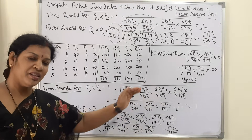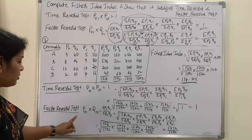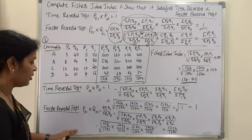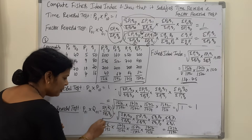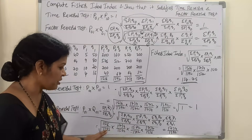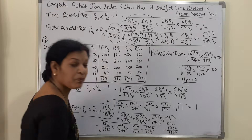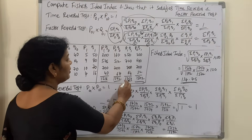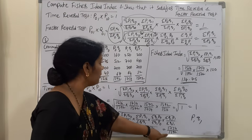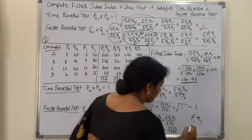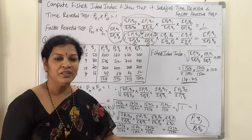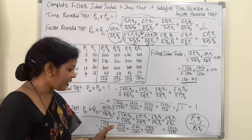In the same way we go for the factor reversal test. The formula is P01 × Q01, and the answer must be equivalent to ΣP1Q1 / ΣP0Q0. Substituting all values, we get 1734 / 1392 — where 1734 is ΣP1Q1 and 1392 is ΣP0Q0. The answer is the same, which means the factor reversal test is also satisfied since the calculations are equivalent to ΣP1Q1 / ΣP0Q0.